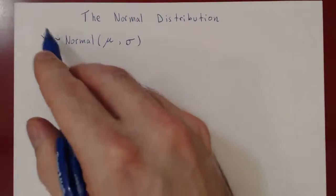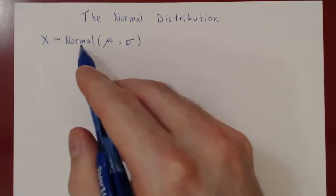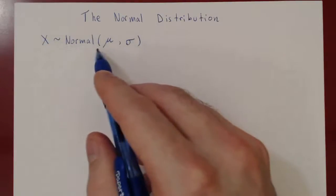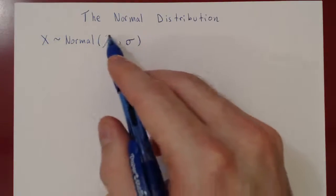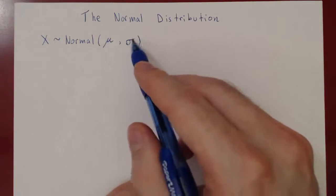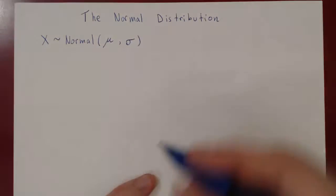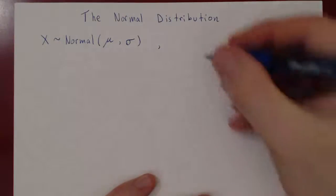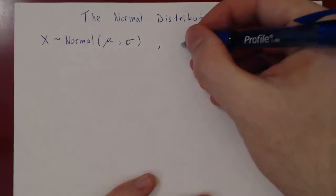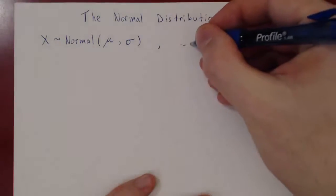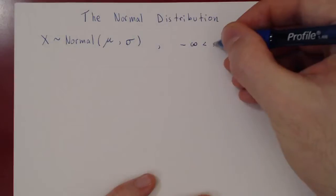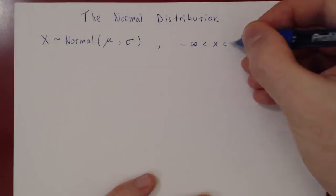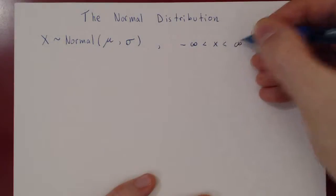This means that the random variable x follows the normal distribution with a mean of mu and a deviation of sigma. This random variable can take on any real number as a value, so the range of x goes from negative all the way up to positive infinity.